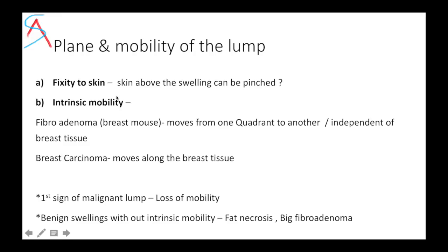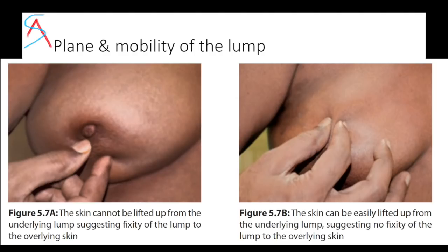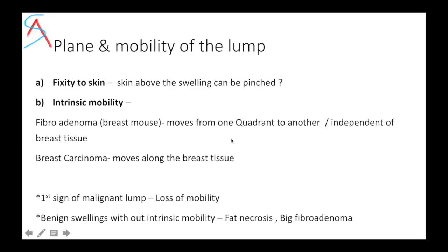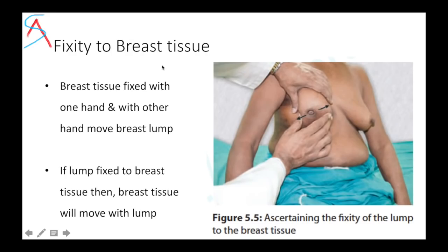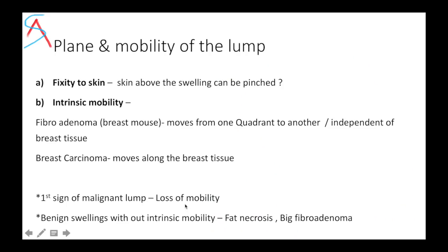Check the plane and mobility of the lump. First, check whether it is fixed to the skin — pinch the skin above the swelling. If the skin is pinchable, it is not fixed to the skin; if it cannot be pinched, it is fixed. Then check intrinsic mobility: fibroadenoma will be mobile from one quadrant to another, independent of the breast tissue — that's why it's also known as breast mouse. Breast carcinoma will move along the breast tissue. The first sign of any malignant lump is loss of mobility. Benign swellings without intrinsic mobility include fat necrosis or a giant fibroadenoma (more than 5 cm).